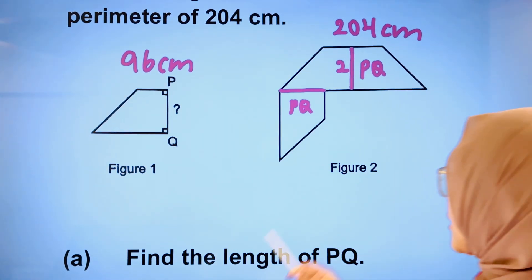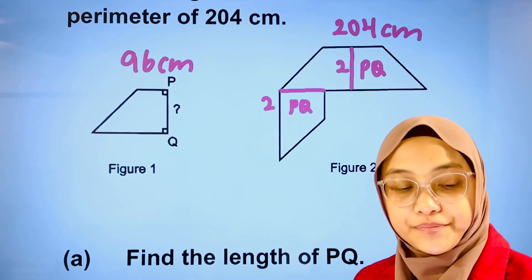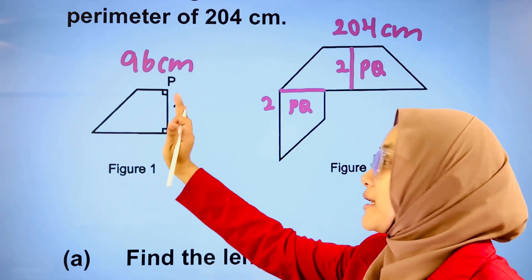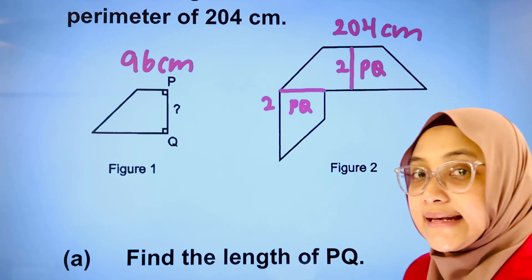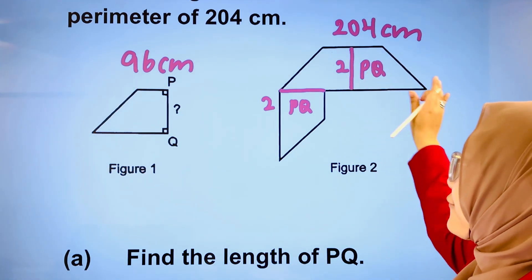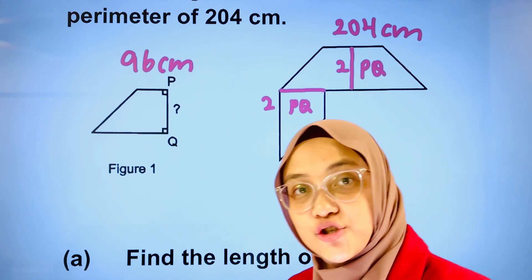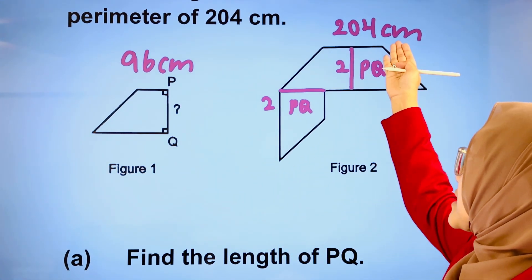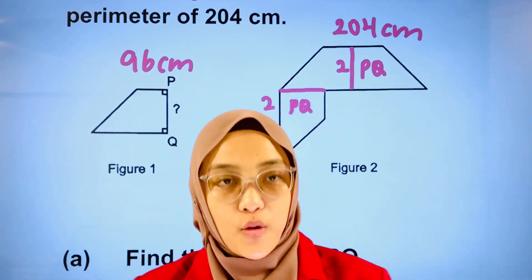We have 2 over here and we have another 2 over here. Meaning to say, if we are going to multiply the perimeter of figure 1 by 3, that is the total perimeter if the trapeziums are separated. But because they are joined, 4 of the PQs are not in the 204 cm. Hence, we can already form our equation.